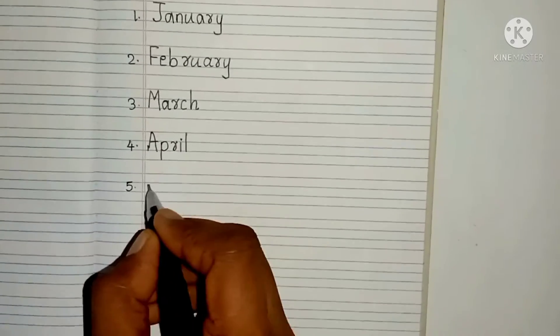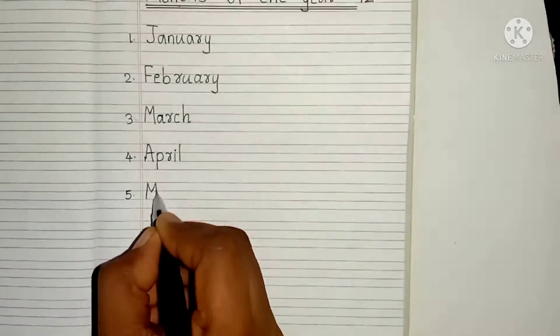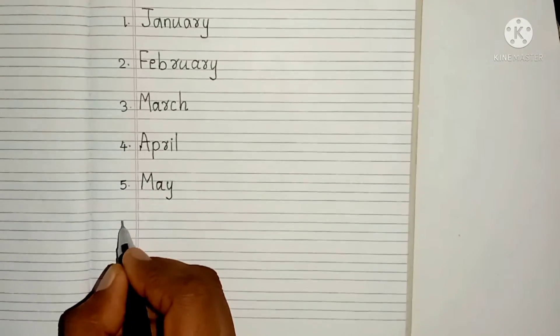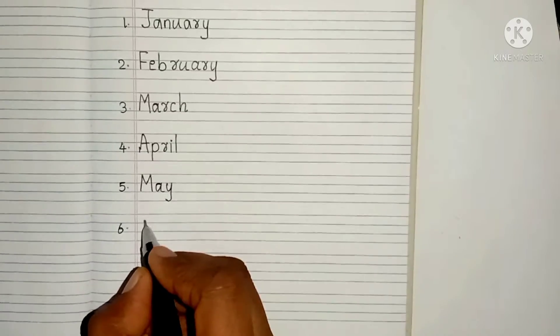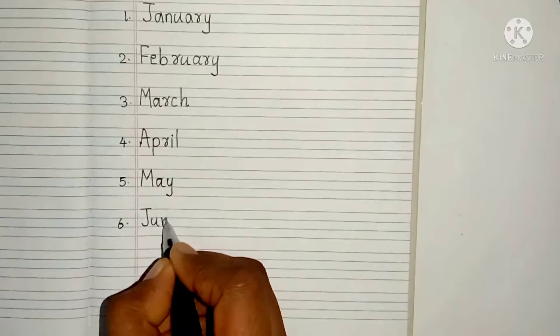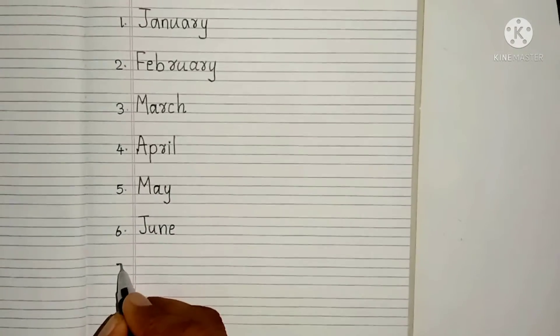Fifth month is M, A, Y. May. Sixth month is J, U, N, E. June.